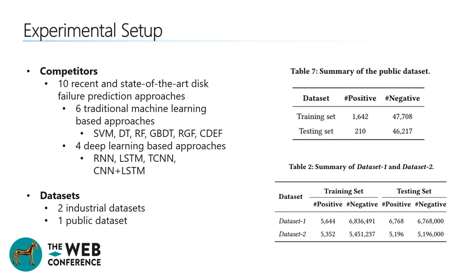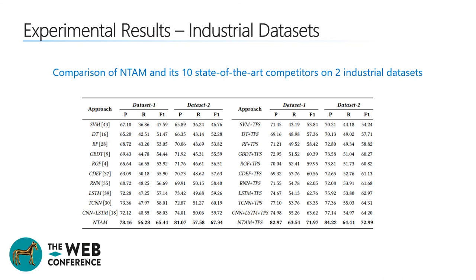In our experimental setup, we compare NTAM against 10 recent state-of-the-art disk failure prediction approaches, including 6 traditional machine learning-based approaches and 4 deep learning-based approaches. We collect two industry datasets from Microsoft Azure; both datasets include status data of millions of disks over two months. We also adopt one public benchmark. For all datasets, failed disks are labeled as positive samples and healthy disks are labeled as negative samples. The experimental results show that NTAM stands out as the best approach for both industry datasets, achieving much better performance than its competitors on all metrics of precision, recall, and F1 score.